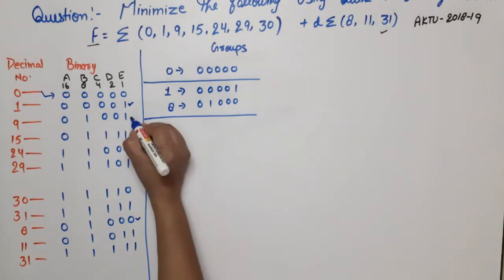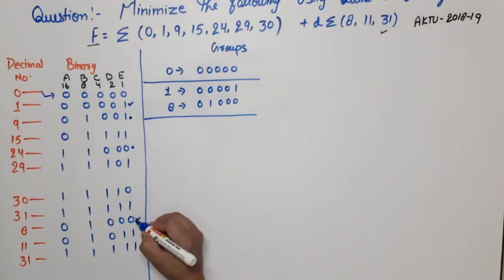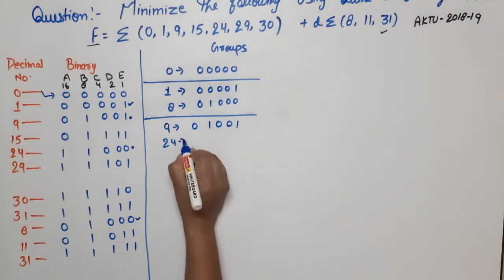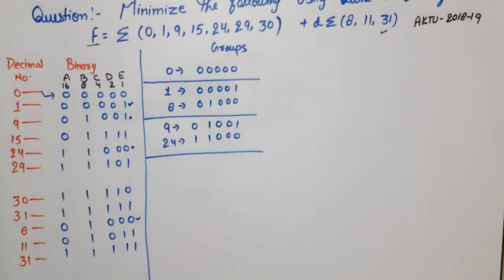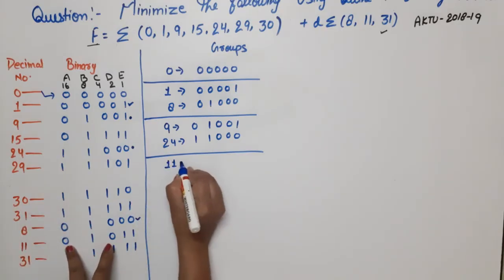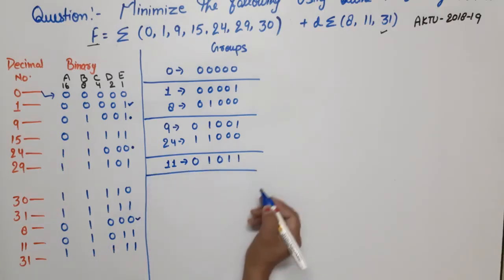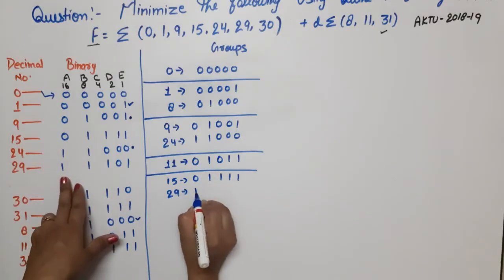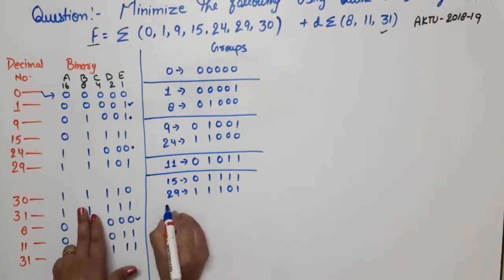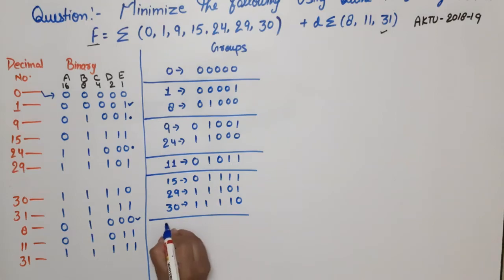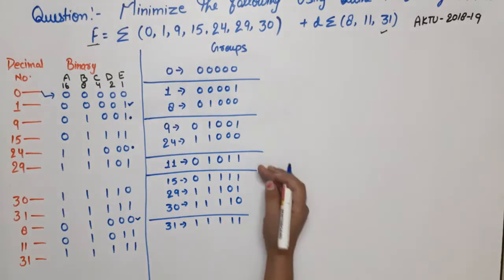Group 2 (two 1s): minterms 9 → 01001 and 24 → 11000. Group 3 (three 1s): minterm 11 → 01011. Group 4 (four 1s): minterms 15 → 01111, 29 → 11101, and 30 → 11110. Group 5 (five 1s): minterm 31 → 11111. So we have five groups total.